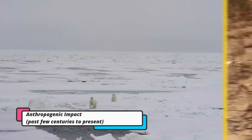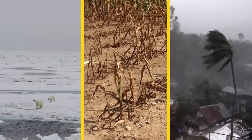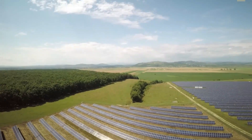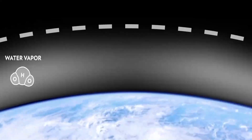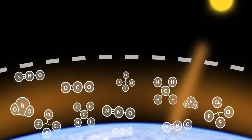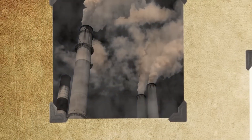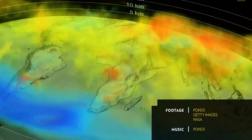Anthropogenic impact, past few centuries to present. In a mere blink of geologic time, humanity has become a formidable force, leaving an indelible mark on the planet. Deforestation, pollution, habitat destruction, and climate change are the signatures of this Anthropocene era. The impact of human activities reverberates through Earth's ecosystems, underscoring the urgent need for stewardship and conservation.